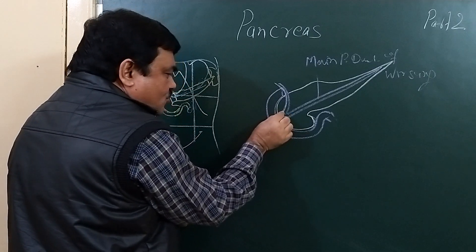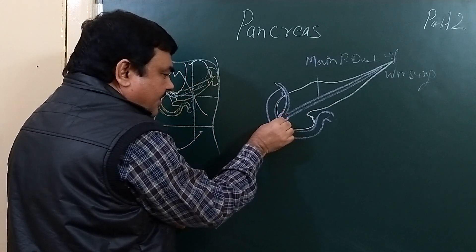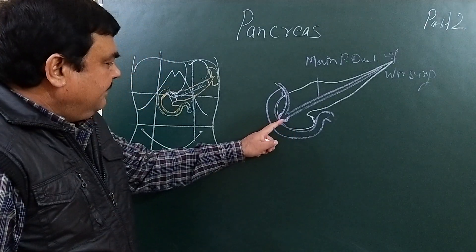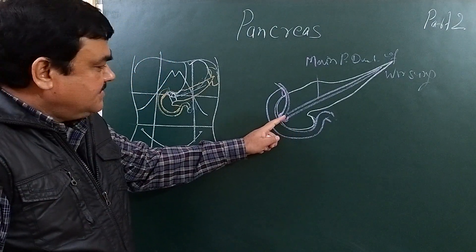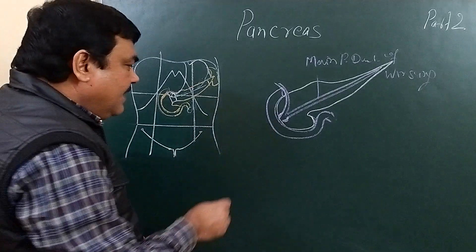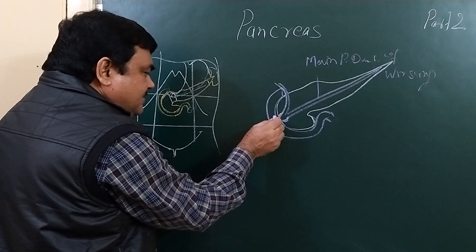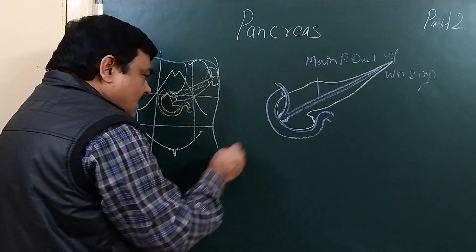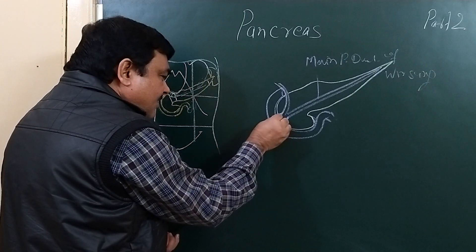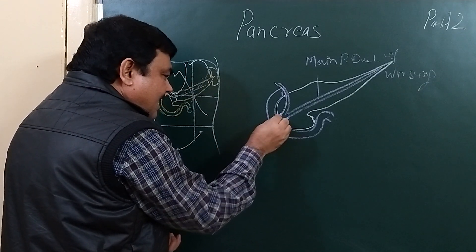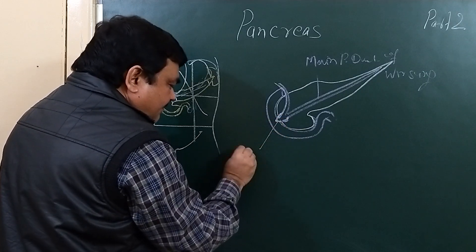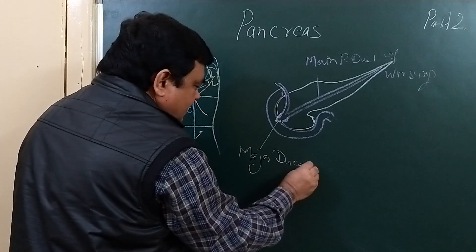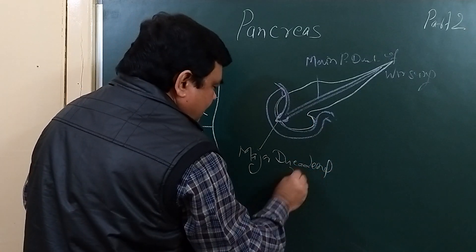Here these two join and form the hepatopancreatic ampulla of Vater. This is the hepatopancreatic ampulla of Vater, and it opens into the second part of the duodenum at the summit of the major duodenal papilla. This is the summit of the major papilla.